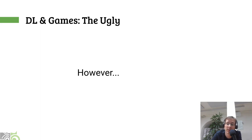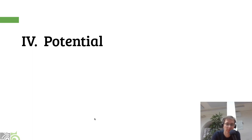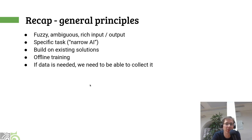So there are things that are a bit hard, but we still think there is some potential for deep learning in games. If we wanted to use deep learning in games, probably it's meaningful to do it on a task that has some kind of rich input or output — something that's hard to do in traditional ways. It needs to be quite specific, very well defined. It should build on existing solutions and pre-trained models to save cost. Ideally, all the training and learning needs to be done offline — not when the game runs — and we need to be able to provide all the data that it needs.